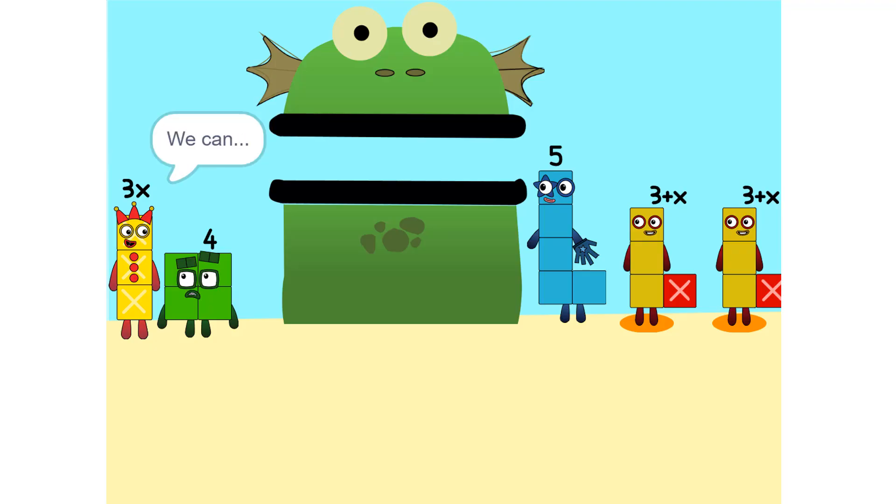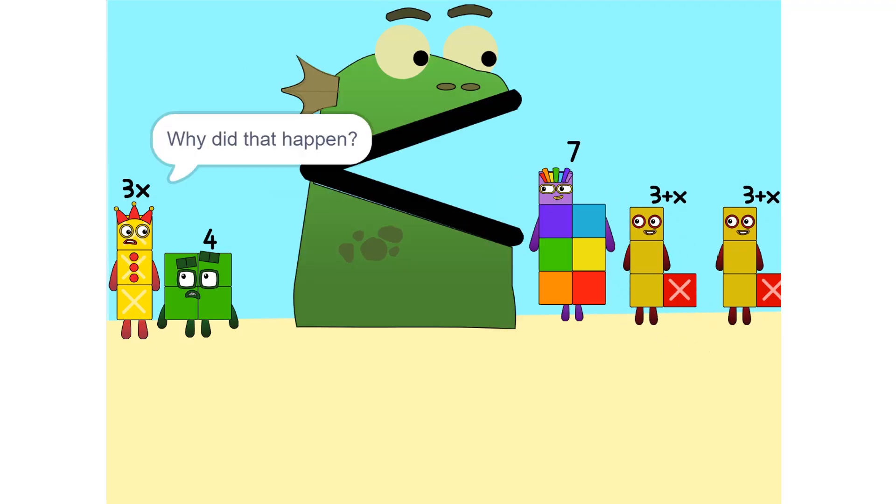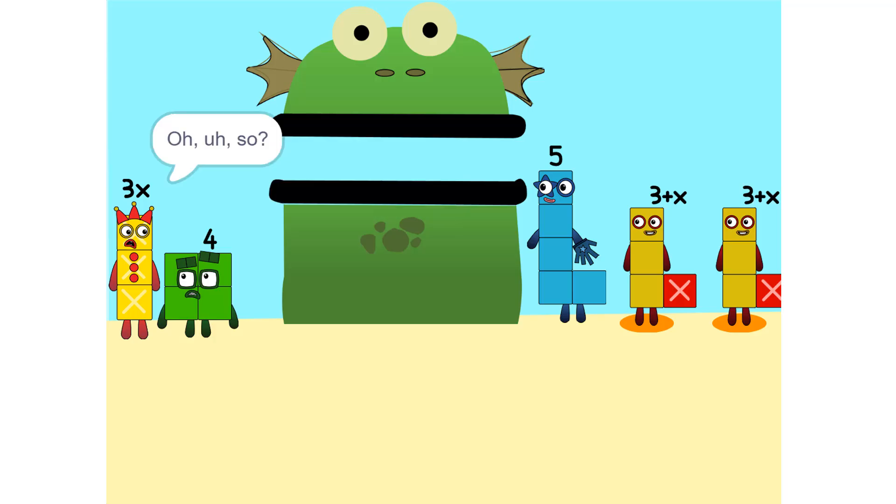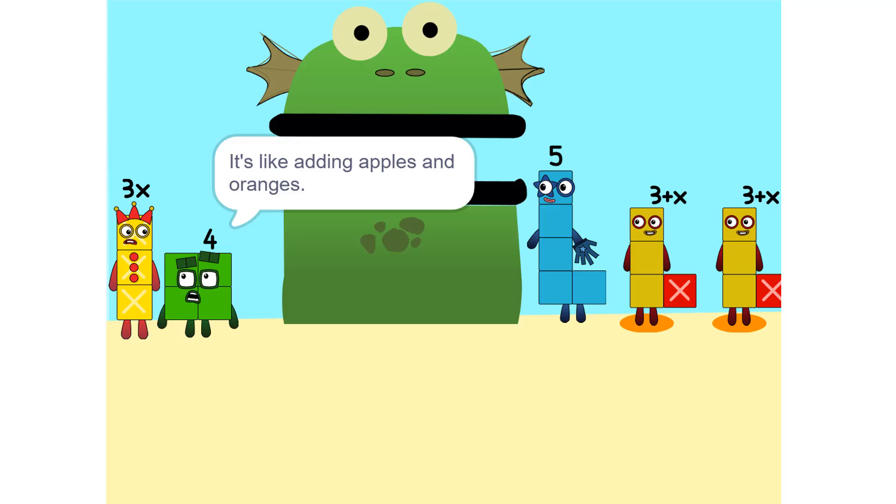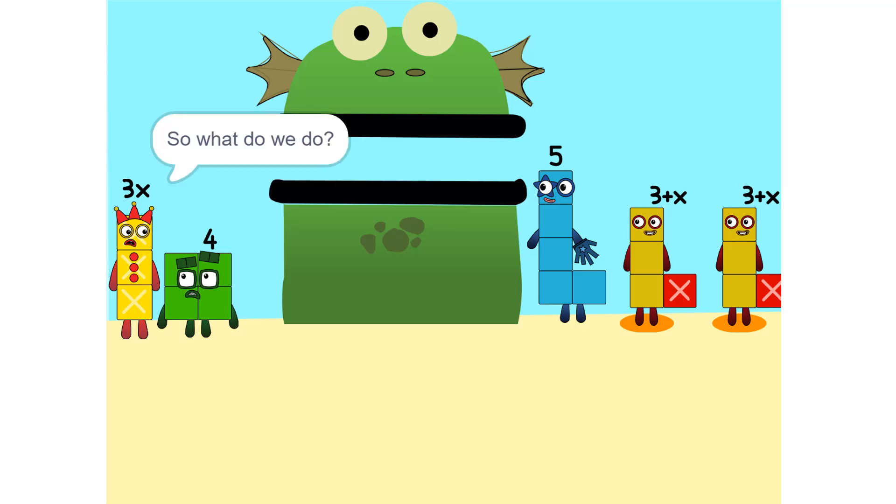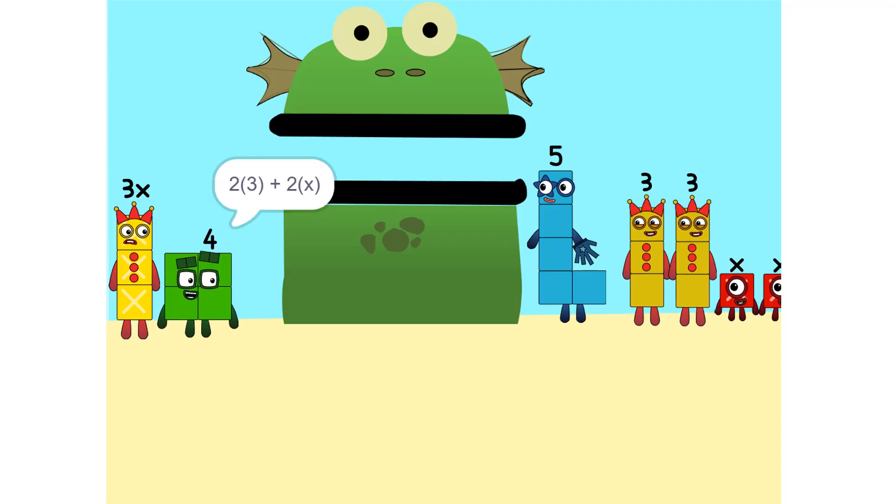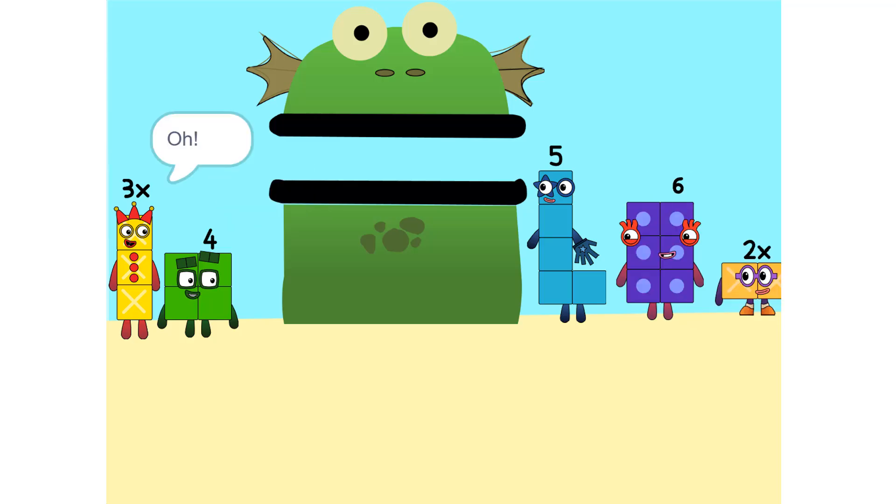I see something. We can add these. Why did that happen? Because the two is connected to the three plus x. Oh, so it's like adding apples and oranges. You can't. So what do we do? Okay, see the two times three plus x? That's the same as two times three plus two times x, which is six plus two x.